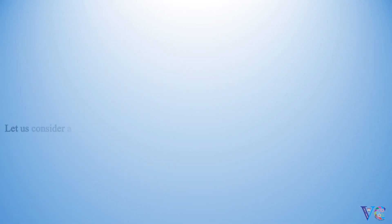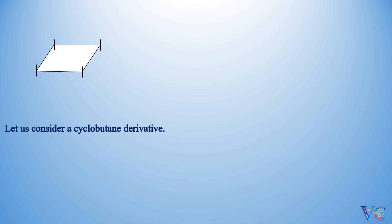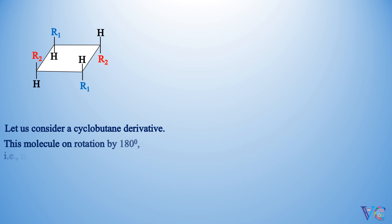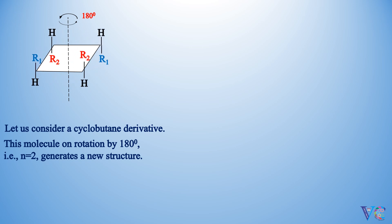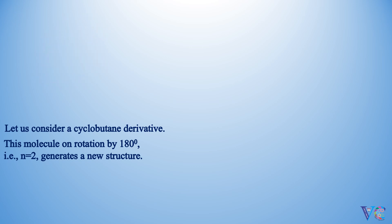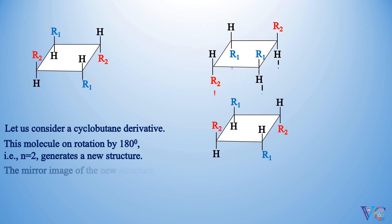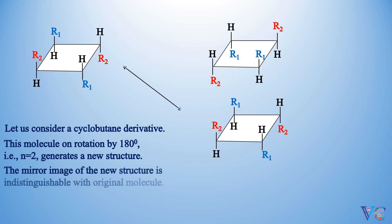Let us consider a cyclobutane derivative. This molecule, on rotation by 180 degrees — that is, n equals 2 — generates a new structure. The mirror image of the new structure is indistinguishable from the original molecule. So the starting molecule is said to have an alternating axis of symmetry.